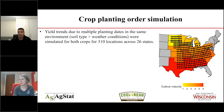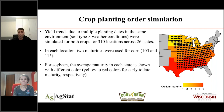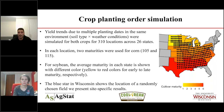In each location, we used maturities for corn of 105 and 115 days. For soybean, you can see the average maturity in each state with different colors from yellow to red for late maturities. In Wisconsin, a blue star shows the location of a randomly chosen field. I'm going to show you some site-specific results — we did the same analysis in every location, but I'll focus on one location for demonstration purposes.